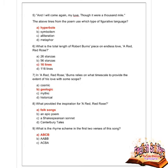Next question: what provided the inspiration for A Red Red Rose? Options are a folk song, an epic poem, a Shakespearean sonnet, and The Canterbury Tales. Option A is correct — A Red Red Rose is a folk song. Next question: what is the rhyme scheme in the first two verses? Options are ABCB, AABB, and ACBA. Option A is correct — ABCB.